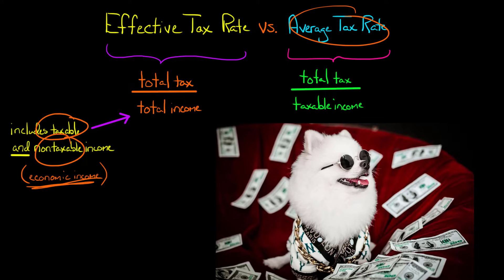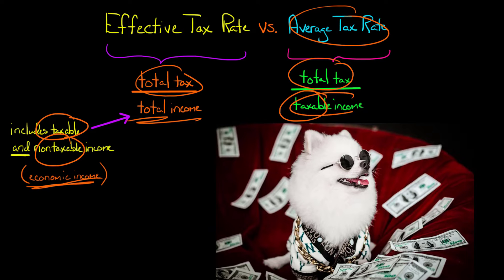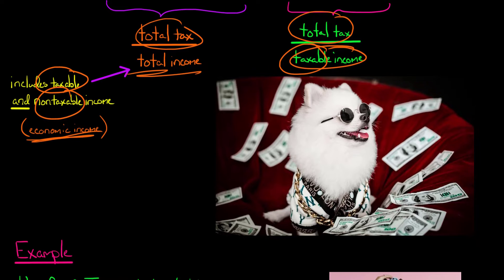The average tax rate, on the other hand, divides total tax by taxable income. So we have total tax in the numerator for both formulas, but the denominator is what's different. For the effective tax rate we're dividing by total income — taxable and non-taxable — while the average tax rate divides by taxable income only.